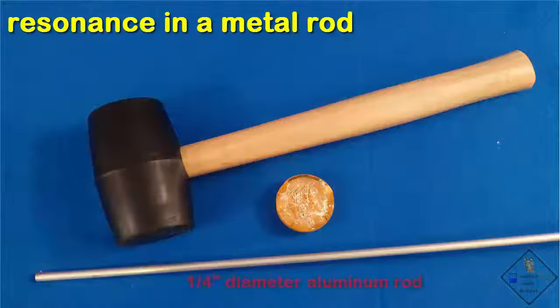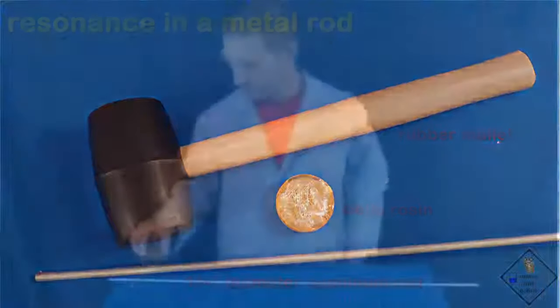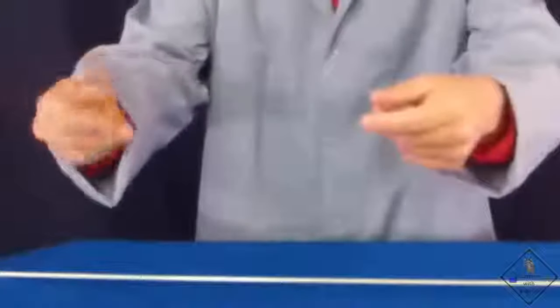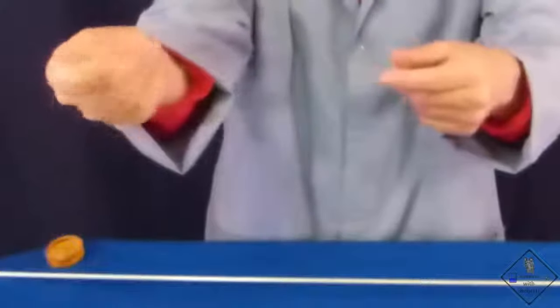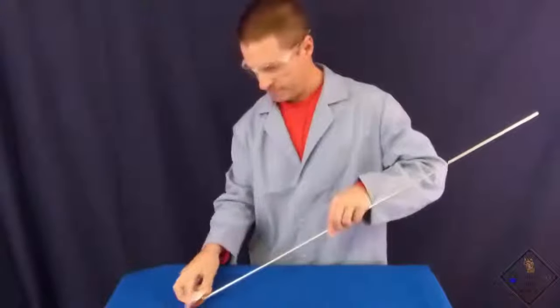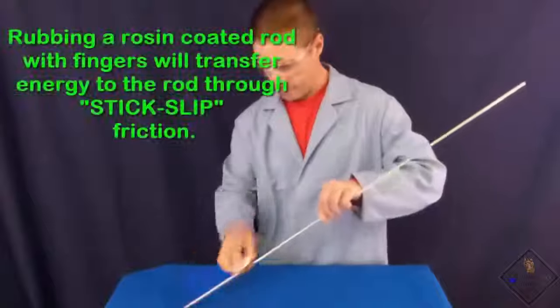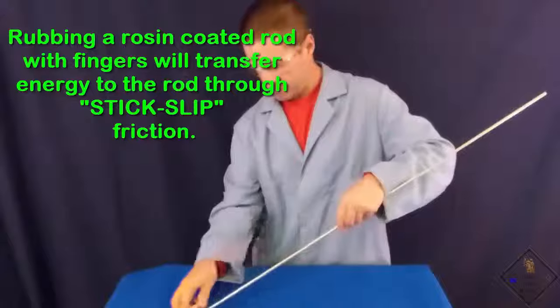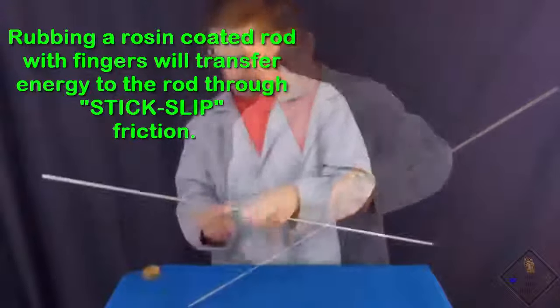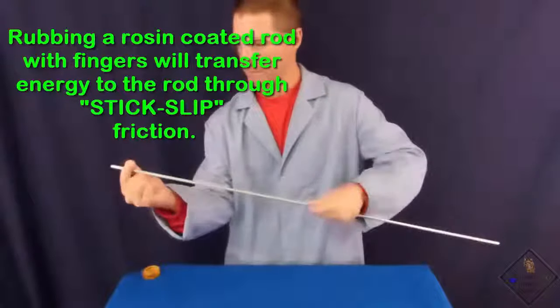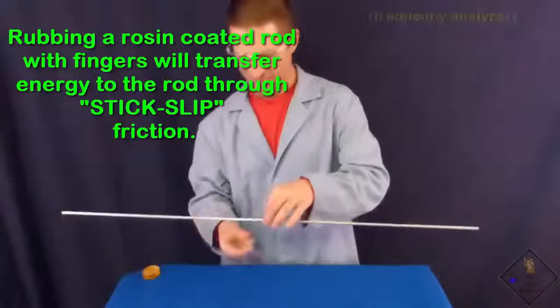Dr. Smith has a quarter-inch diameter aluminum rod, cello rosin, and a rubber mallet. Without rosin on his fingers, his fingers rub together smoothly. But when rosin is placed on his fingers, Dr. Smith has a lot of friction between his fingers. Dr. Smith first rubs the rosin on one half of the rod. The purpose of the rosin is to transfer energy to the rod through stick-slip friction. The rosin is then spread evenly over the end of the rod.